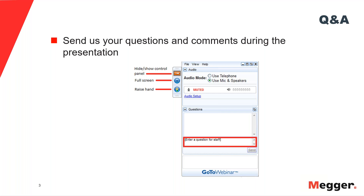All webinar attendees are eligible to receive one NIDA CTD and one PDH or 0.1 CEU for attending. You will receive this in an email within two business days of the webinar. That email will also include a copy of the PowerPoint presentation and a link to a video recording of the webinar if you'd like to watch it again or share with your colleagues. You can ask questions at any time during the presentation, and they will be answered at the end of the webinar during the Q&A session.